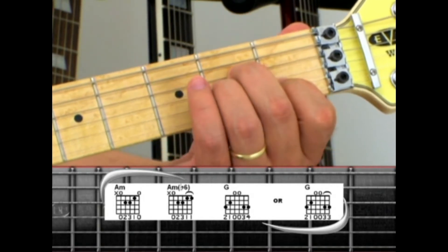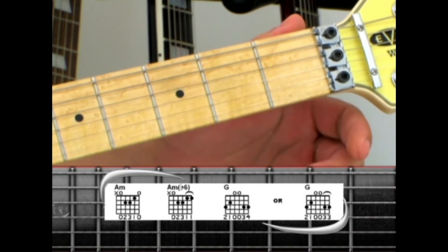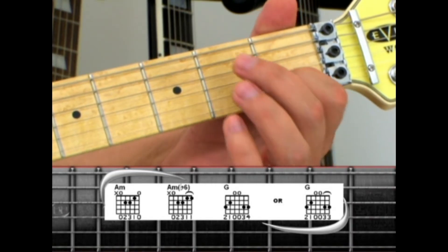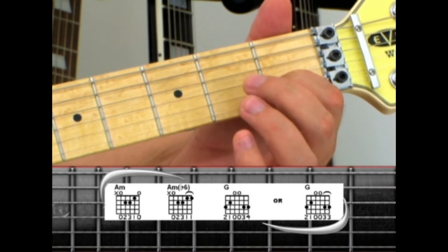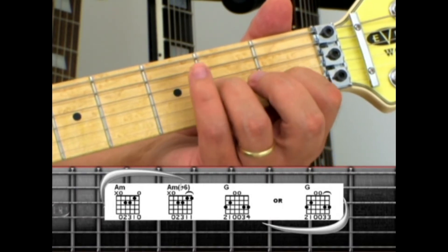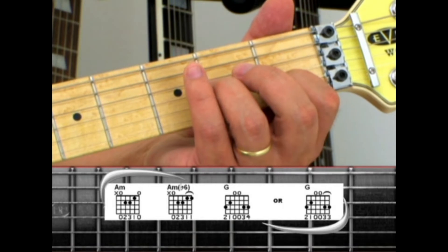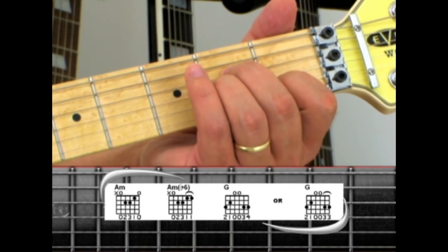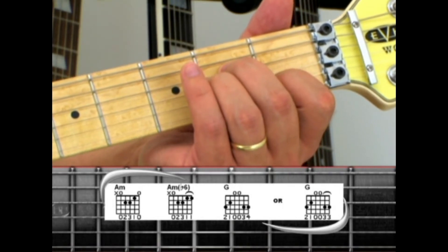The A minor chord uses the first string open, second string first fret with the index or first finger, third string second fret with the ring or third finger, and fourth string second fret with the middle or second finger. The fifth string is open.